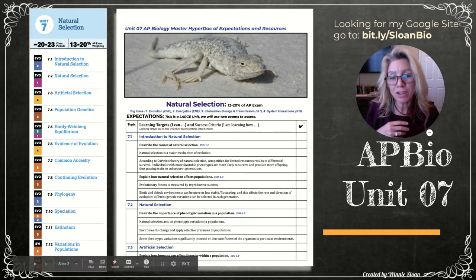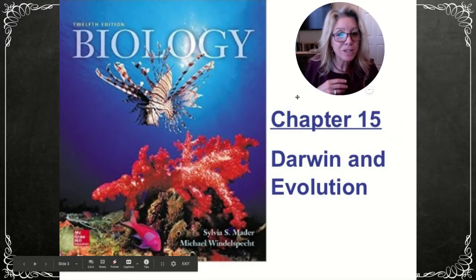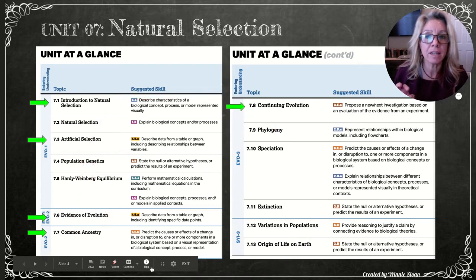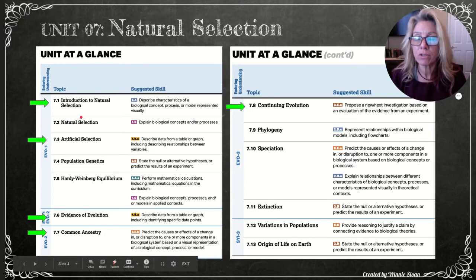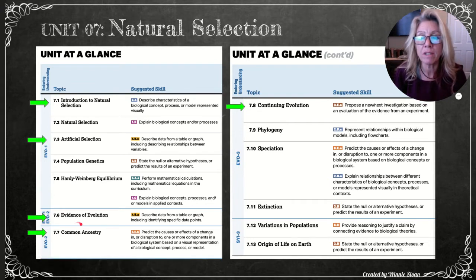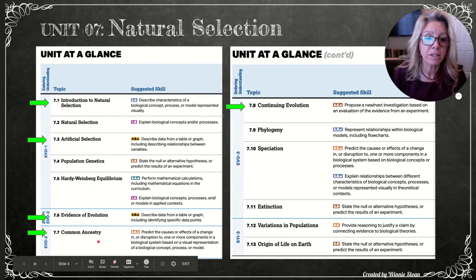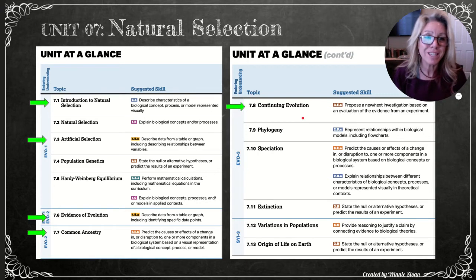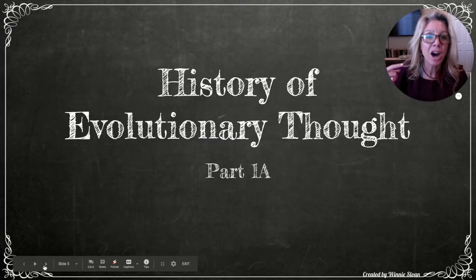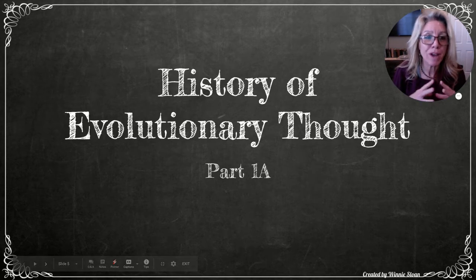We're starting with chapter 15, talking about Darwin and evolution, broken into two videos. The unit at a glance, taken directly from the College Board, covers: an introduction to natural selection, artificial selection (7.6), evidence for evolution, common ancestry, and continuing evolution — five of the thirteen topics covered across two videos, with many revisited throughout the unit.